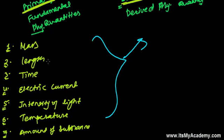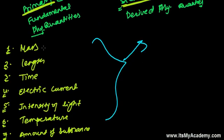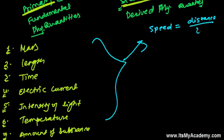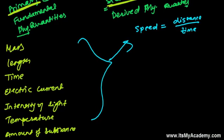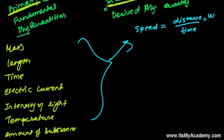Derived quantities are those quantities which are made from these seven fundamental quantities — maybe one, maybe two, maybe three, or maybe all of them. For example, speed is a derived physical quantity because speed means distance traveled in a certain interval of time. Distance is length and the interval is time.